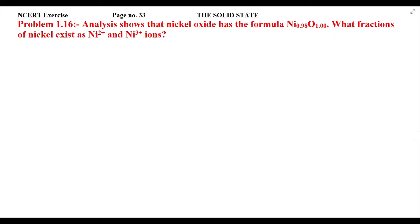Students, here we have NCERT exercise problem 1.16 from page number 33 of the solid state chapter. Let's read the statement: Analysis shows that nickel oxide has the formula Ni₀.₉₈O₁.₀₀. What fraction of nickel exists as Ni²⁺ and Ni³⁺ ions? We are told that nickel oxide has the formula Ni₀.₉₈O₁.₀₀.